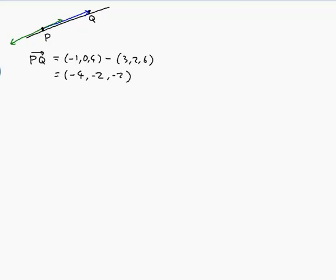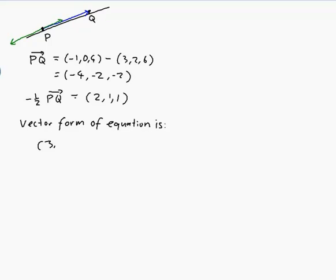I don't like that vector because it has too many minuses, but I can still reach every point on the line by using multiples of any vector pointing along the line. So I could use half of PQ or minus a half of PQ, since I'm doing multiples and can still get to all the same points. Let's use minus a half of PQ, which gives us (2, 1, 1). So the vector form of the equation is (3, 2, 6) + T(2, 1, 1), for T a real number.